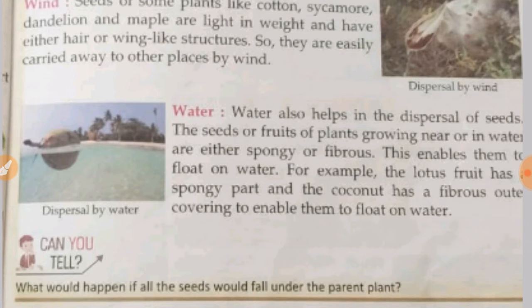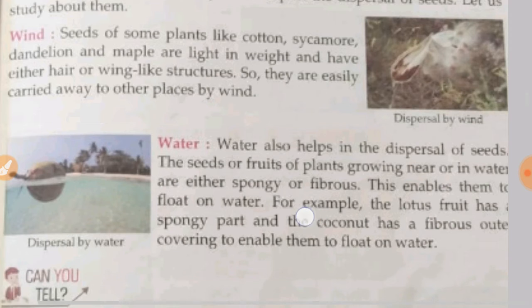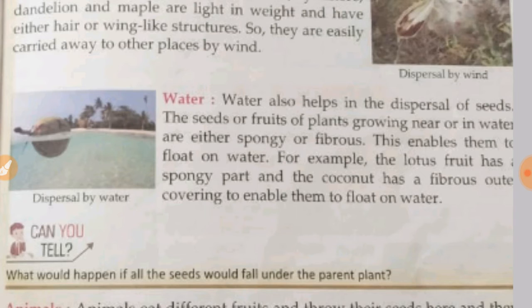The next agent is water. Water also helps in dispersion of seeds. Those plants that grow near the water, they are spongy or fibrous, which enables them to float on water. For example, the lotus fruit has a spongy part and the coconut has a fibrous outer covering to enable them to float on water.